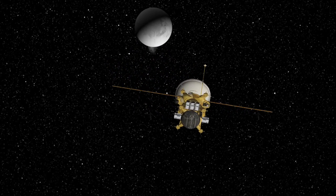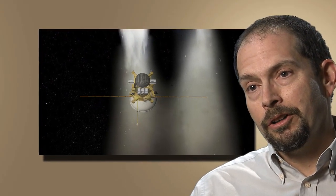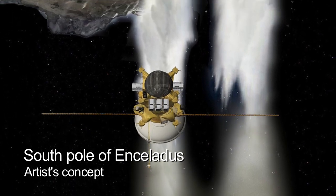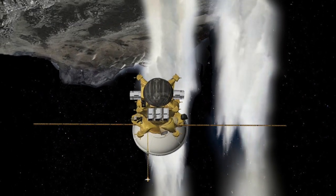And it's a chance to see whether there might be molecules that would indicate that life has actually formed within the source region of these geysers. These geysers have water ice and we strongly suspect that there's liquid water in the region that these geysers are coming from. We know there are organic molecules there because they've been measured by Cassini.